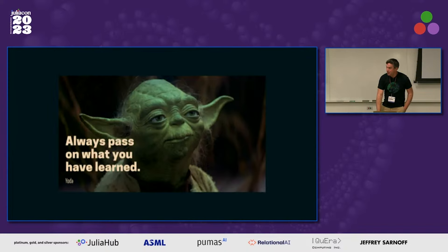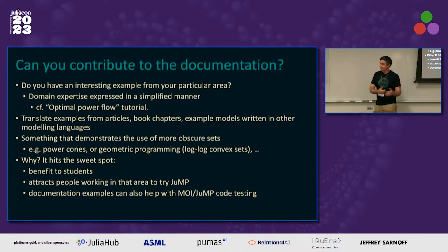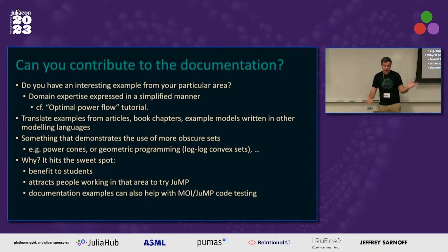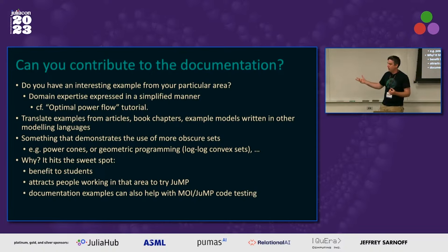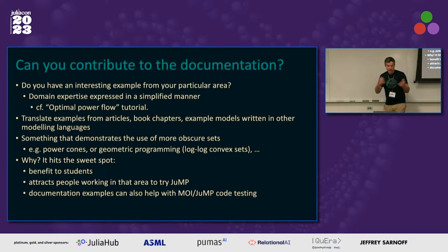This is the last part of my talk: always pass on what you have learned. How can you contribute to the documentation? I'd like to prompt you to contribute and share your experience. Do you have an interesting example in your particular area? Can you simplify it in a manner useful for a tutorial? Maybe you can translate an article or book chapter, or translate an example model from another modeling language. Maybe you have an idea that demonstrates some of the more obscure sets in JuMP — power cones, geometric programming ideas. The benefit: it helps students of the language, attracts people in your area to try JuMP, and the documentation examples actually help with JuMP's co-testing.